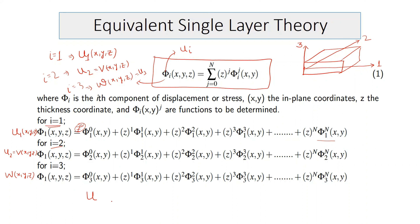Writing this in displacement form: u1 equals u0 plus z times u1^(1) plus z^2 times u1^(2) plus, continuing to z^n times u1^(n). This is the Nth-order expansion of the displacement field u1 in the thickness coordinate z, applicable similarly to u2 and u3.